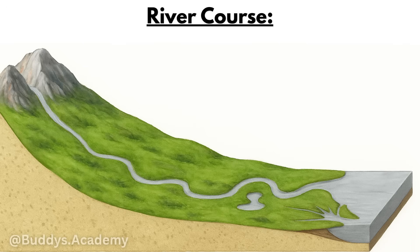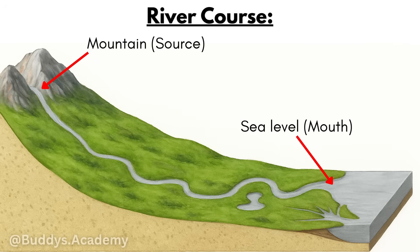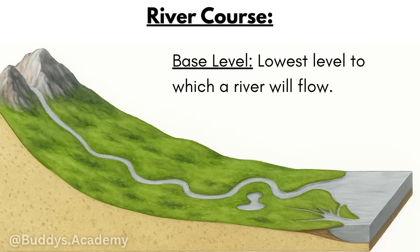We can see in the diagram that your river is going to start in the mountain, and that's going to be known as the source of the river — basically the start of the river. Now the same river is then going to flow all the way down to the river mouth, which is usually around your sea level, and this is going to be known as your base level — the lowest level to which a river can flow.